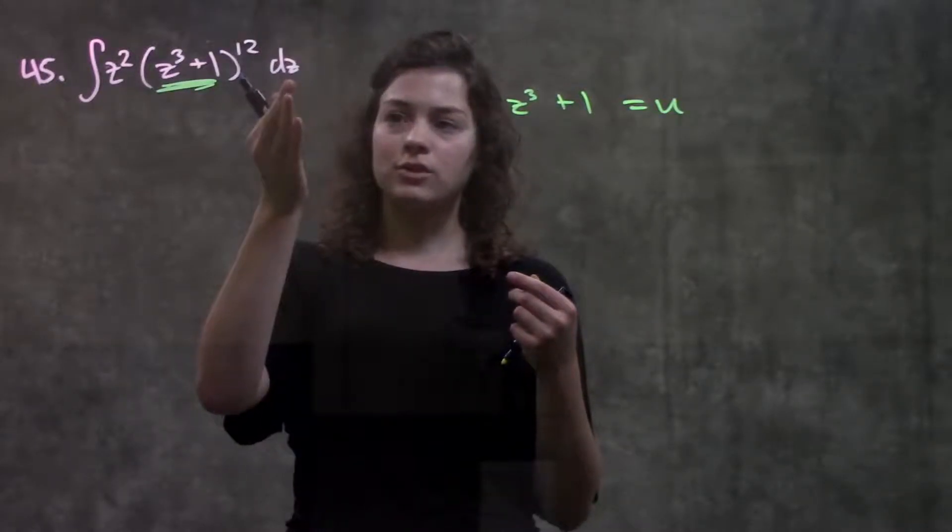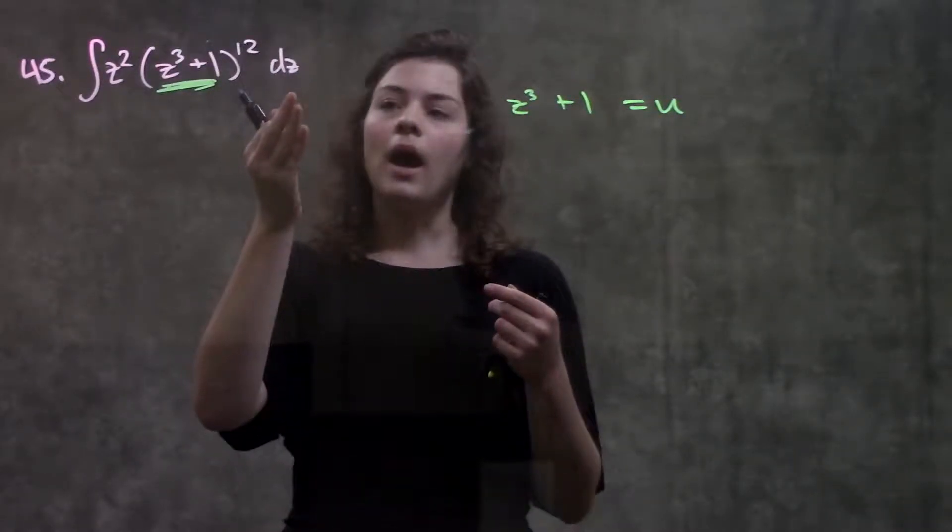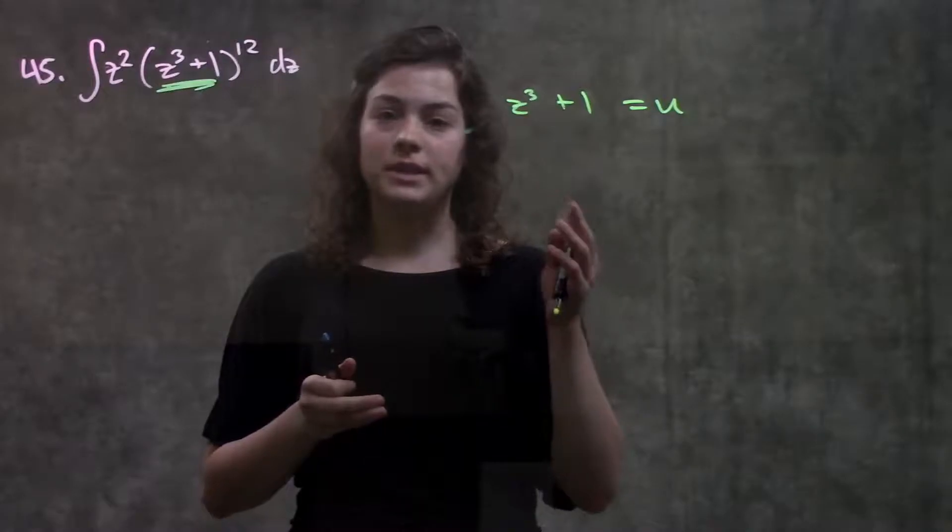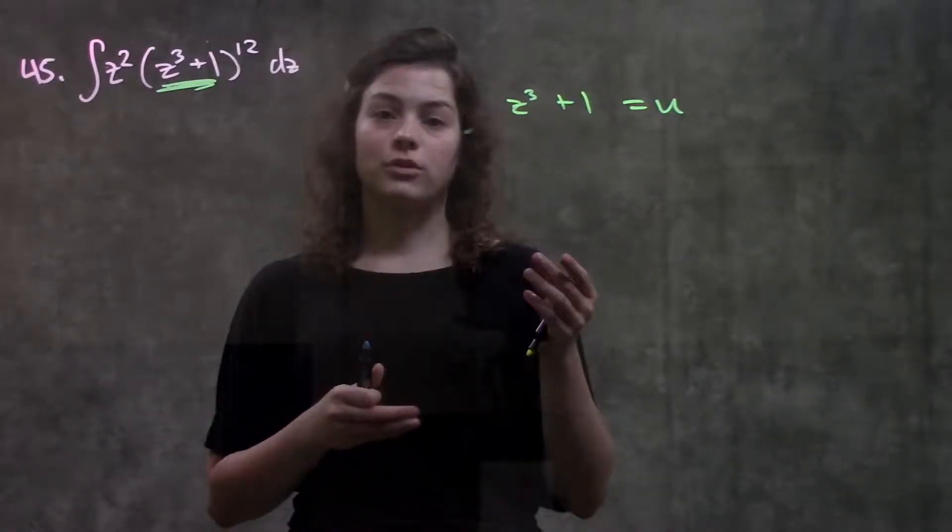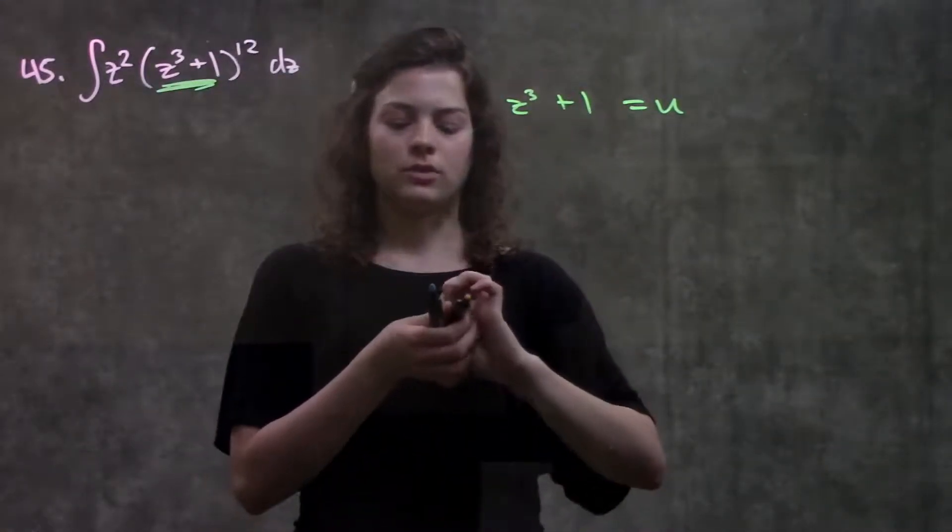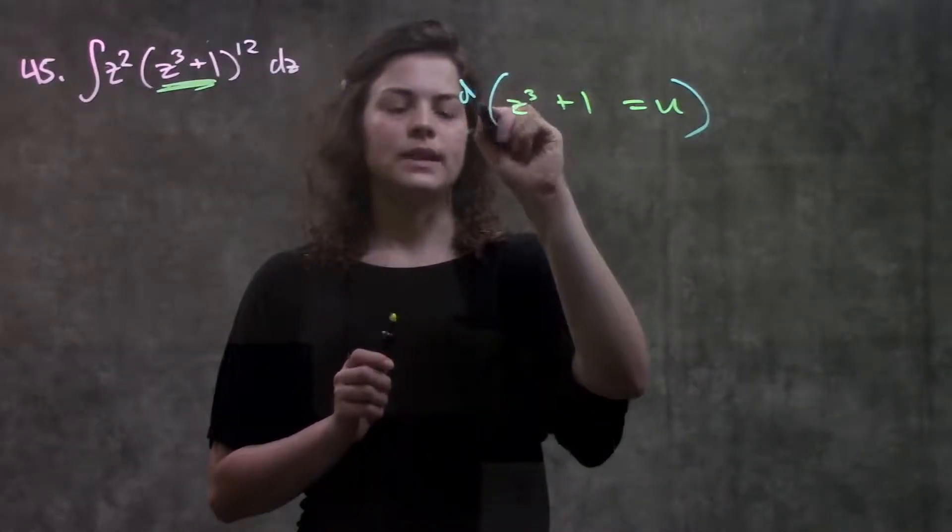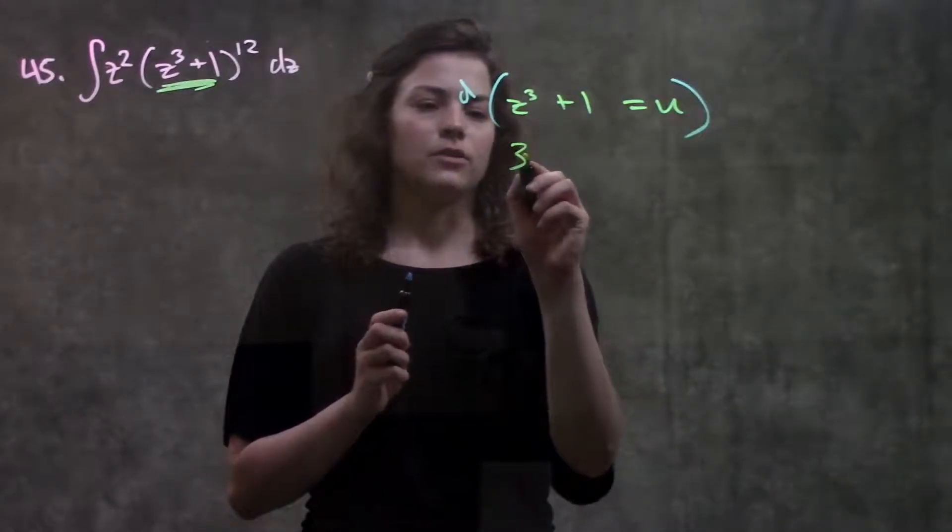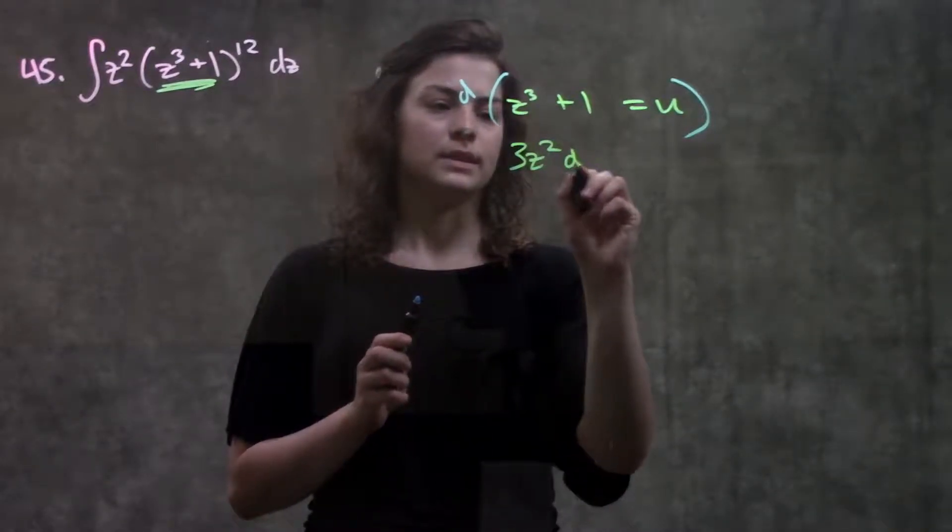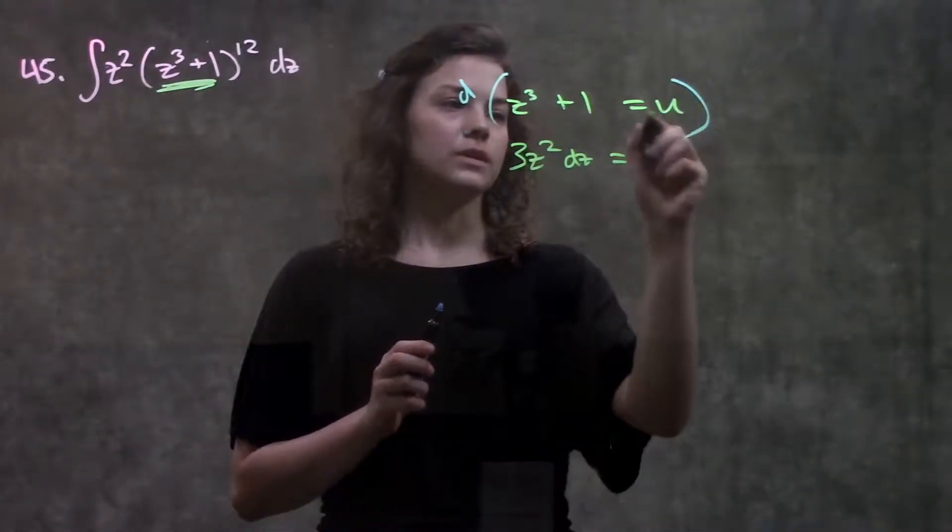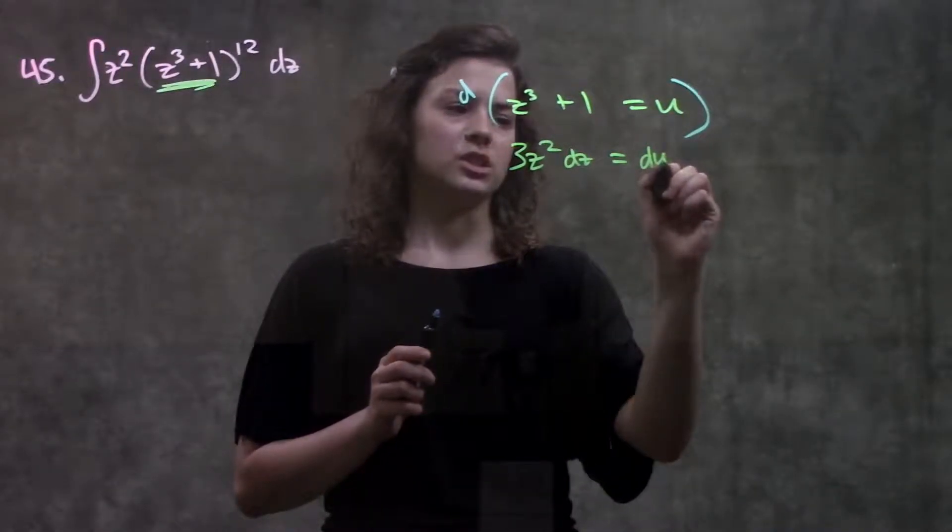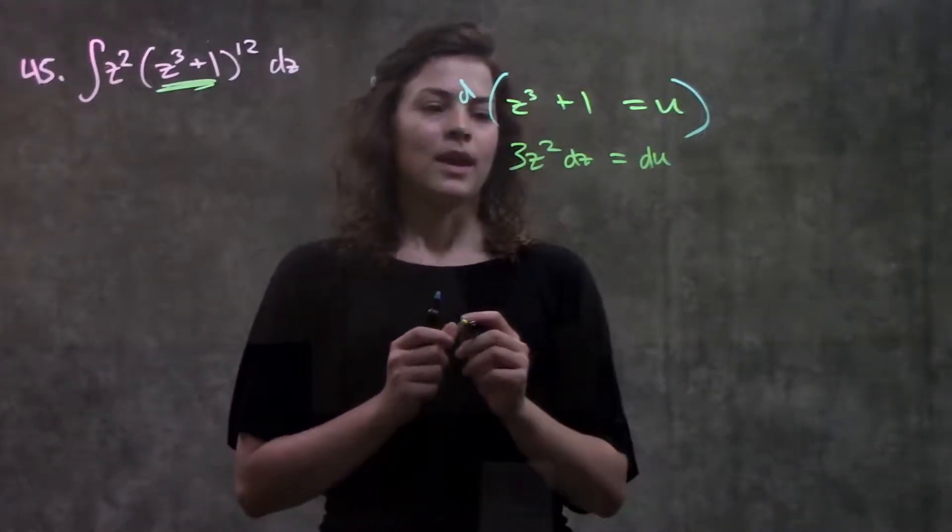But if you notice here in the original problem, I have a dz. I want to rewrite that in terms of du also. So in order to get that, I'll need to take the derivative of both these sides. And when I take the derivative on this left here, I'll get 3z squared dz equals, on the right here, derivative of u is just du.